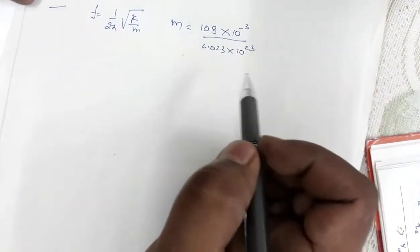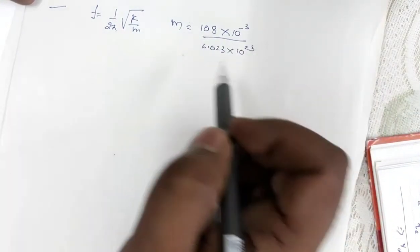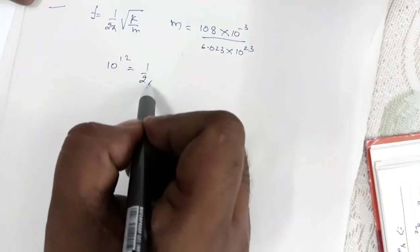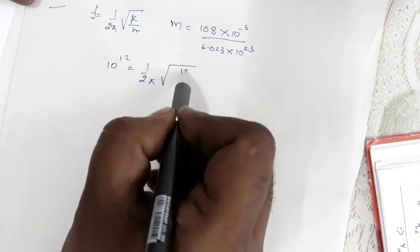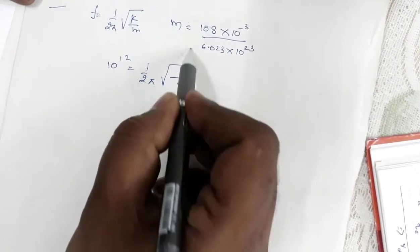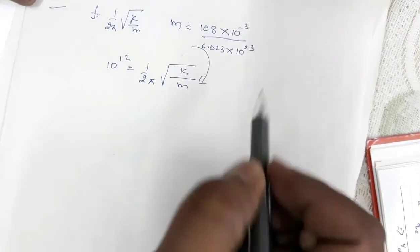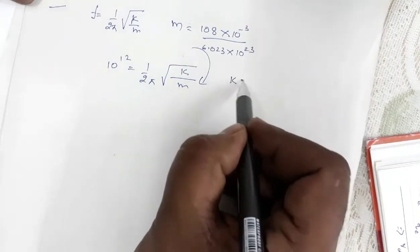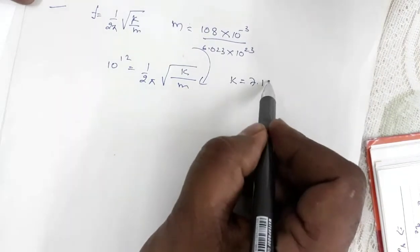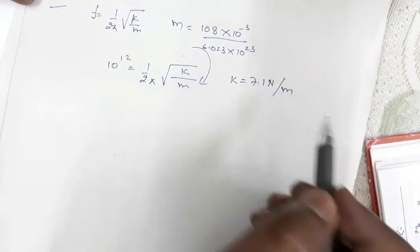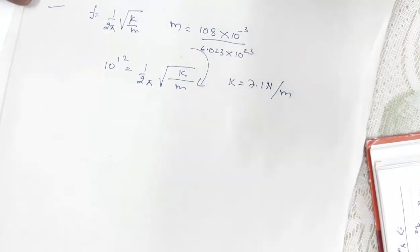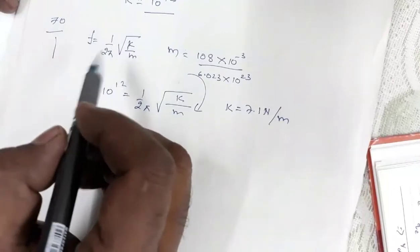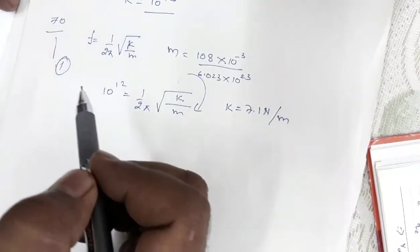The frequency is given as 10¹² Hz, so 10¹² = (1/2π)√(k/m). Solving for k, it comes out to be 7.1 Newton per meter. For question number 70, the correct option is number 1.